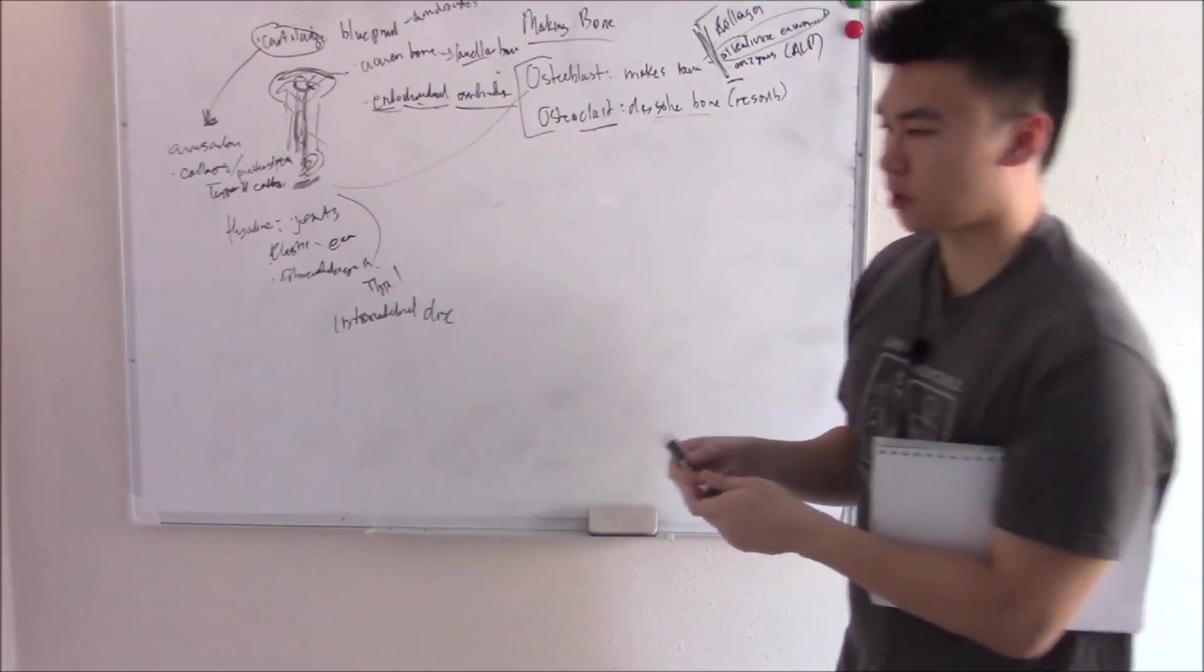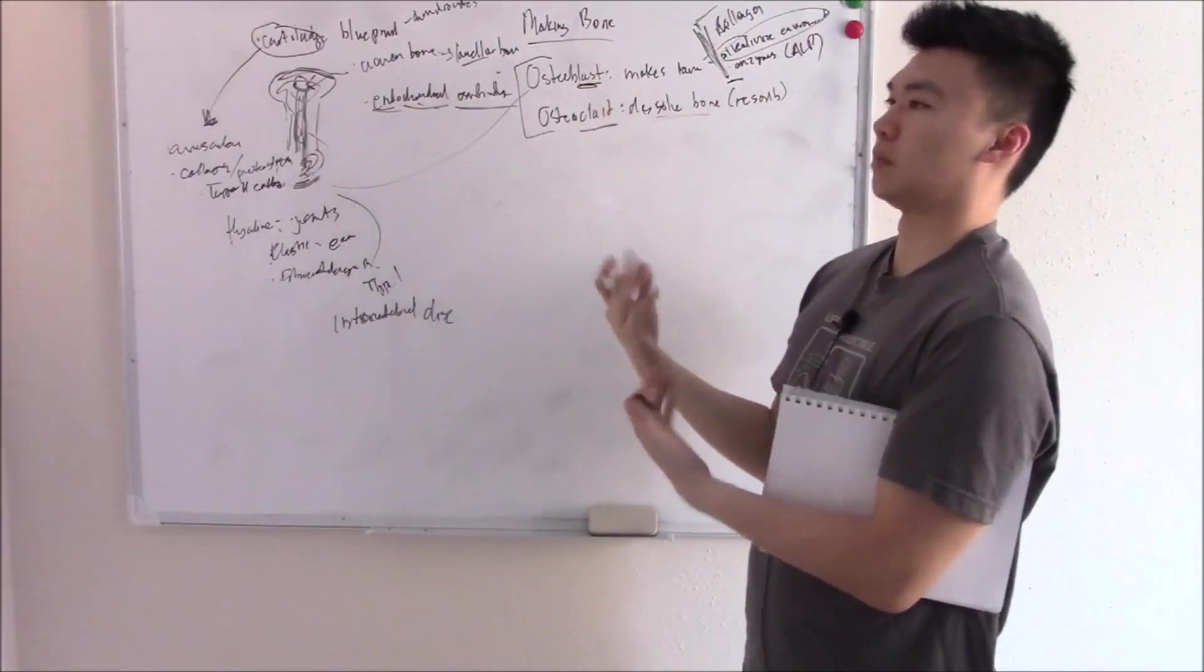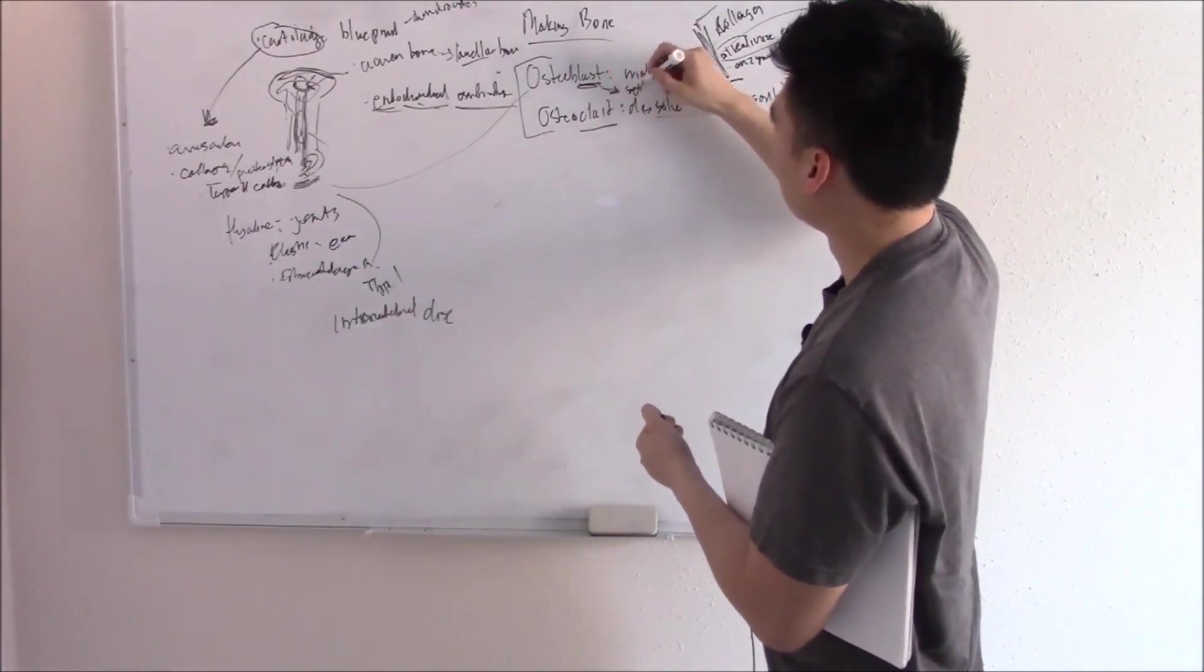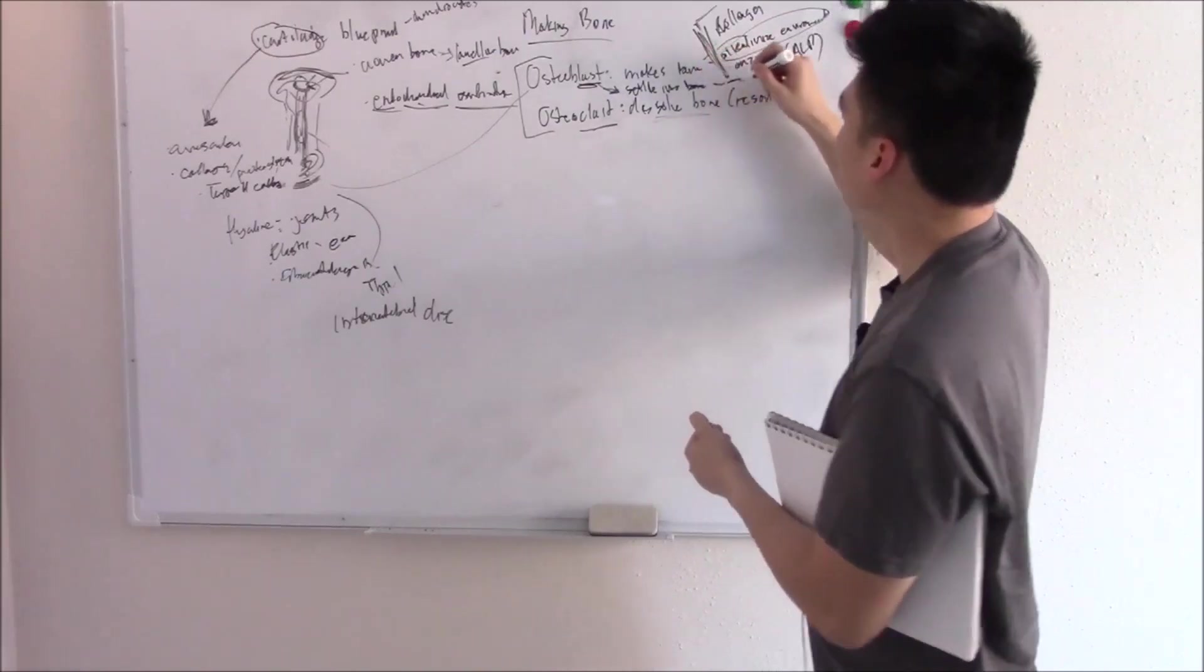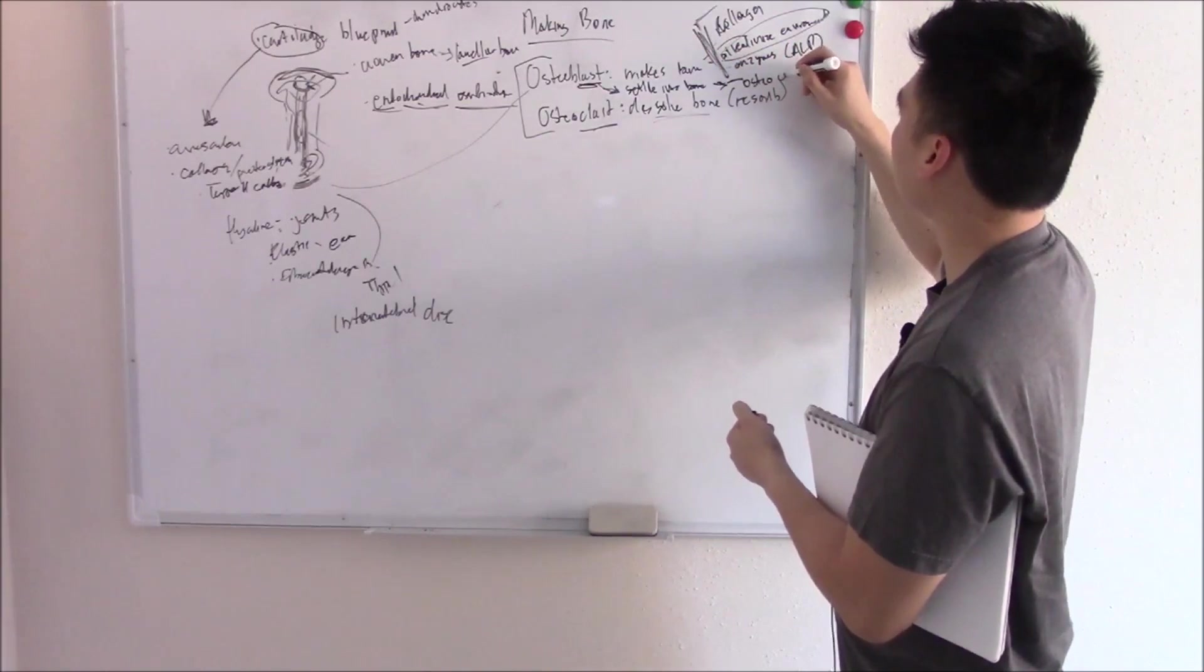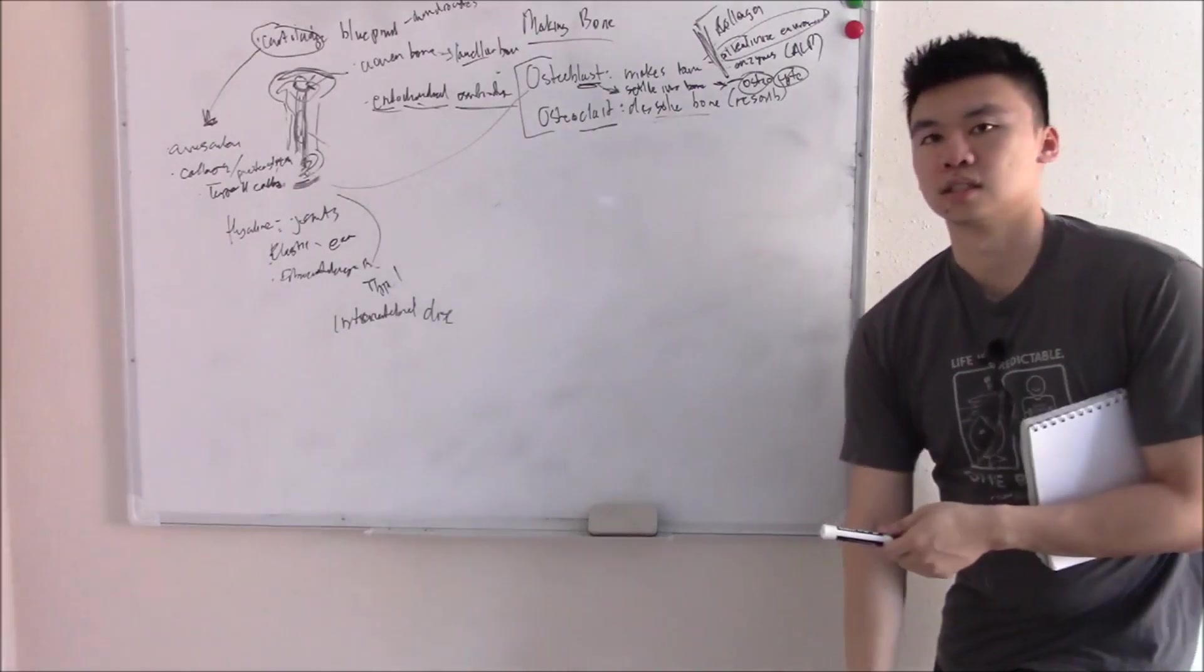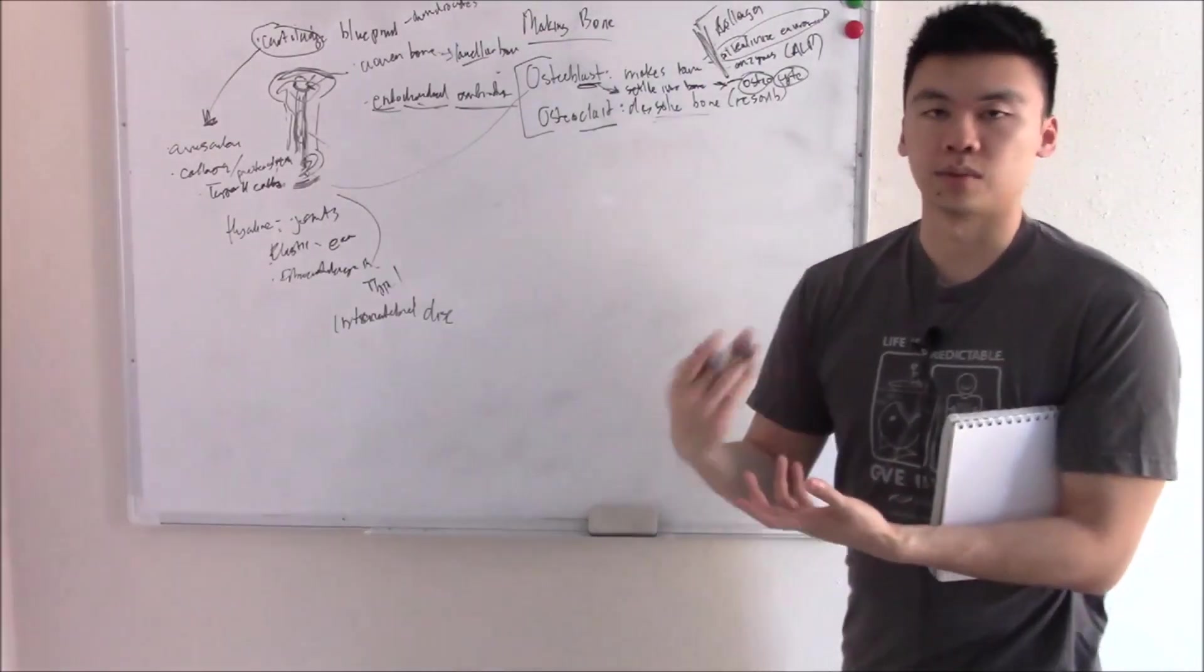Why is it called osteoblast? If you remember from my heme block, blast means immature cells. What does that mean? Well, osteoblast is an immature cell, produces bone, and then will eventually settle into that bone, settle into bone and mature. When it matures, it finally gets the title osteocyte or bone cell. That's why it's called an osteoblast. It's just an immature cell. It still functions, but once it goes into bone, it will mature and become osteocyte.